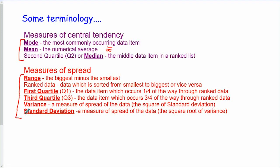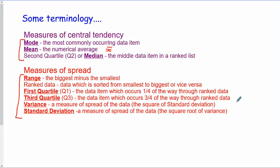Measures of spread tell us how spread out the data is. The range is the biggest minus the smallest. Ranked data is data which is sorted. The first quartile Q1 is the data item which occurs one quarter of the way through ranked data, and the third quartile occurs three quarters of the way through. The variance and standard deviation are measures of spread — the variance is the square of the standard deviation, so the standard deviation is the square root of the variance.